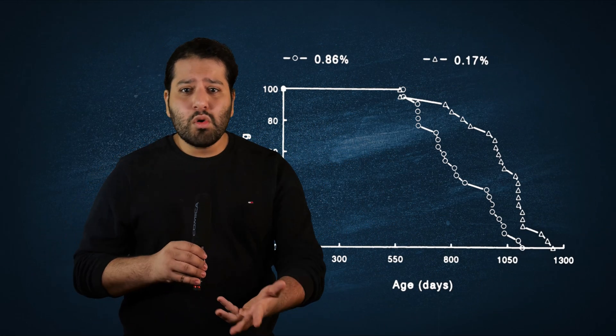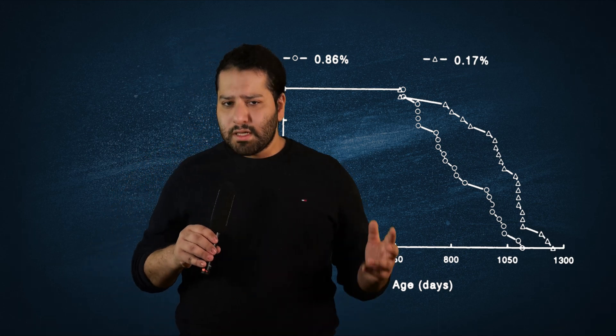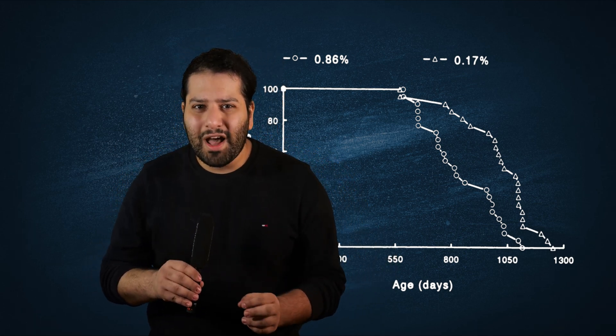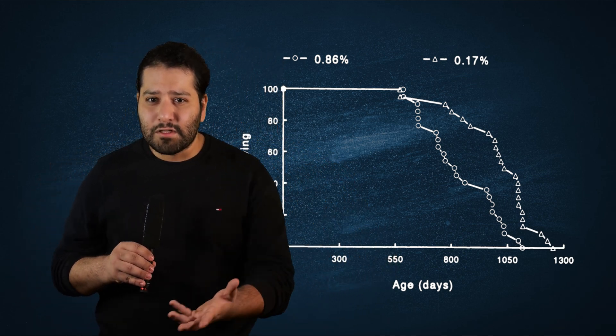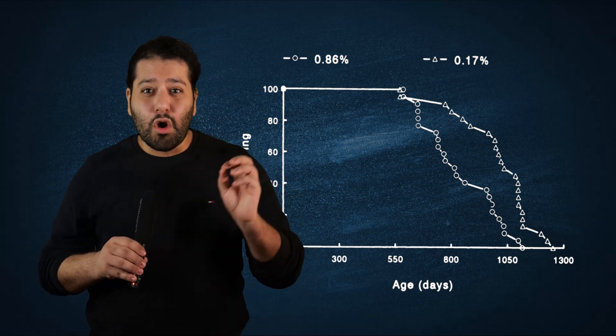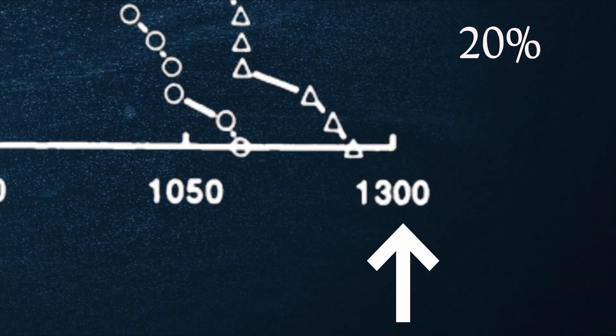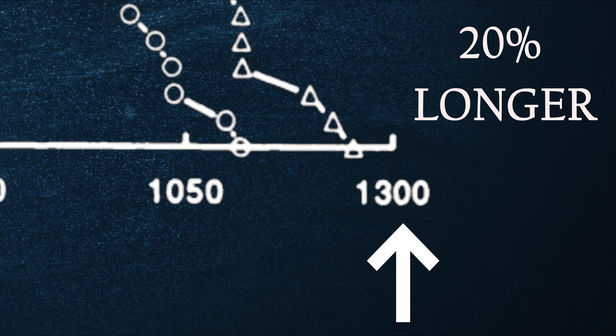Here's a graph. It shows what happens to mice if you restrict their intake of a single amino acid. Do you see what happens if the mice have had their intake of this one amino acid restricted? Those mice end up living 20% longer than the mice who consumed a normal diet.